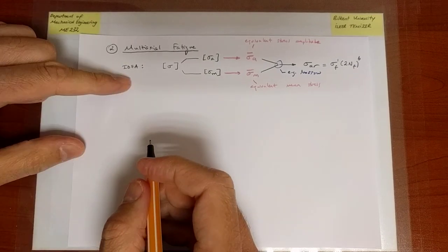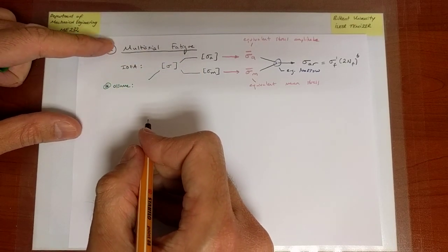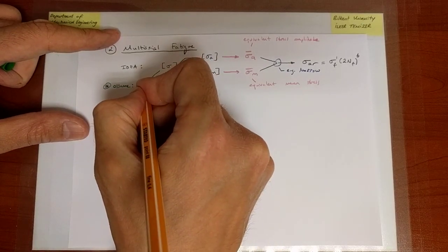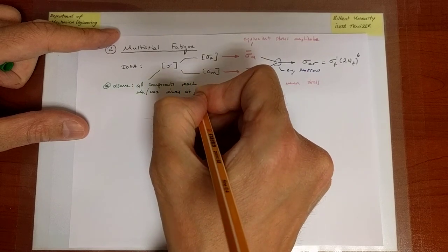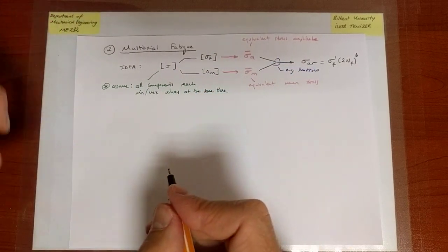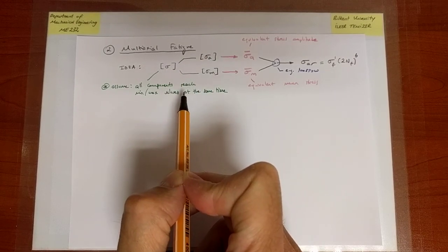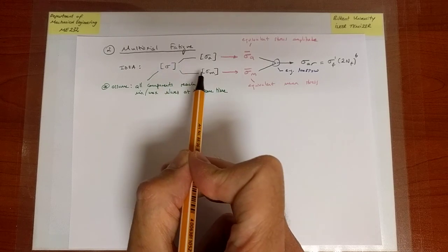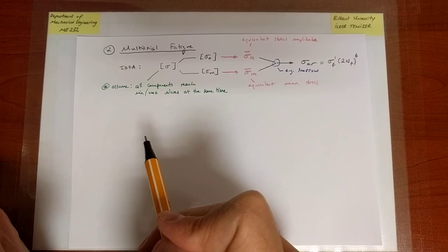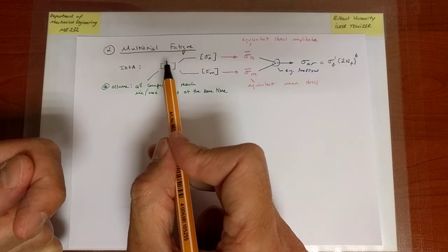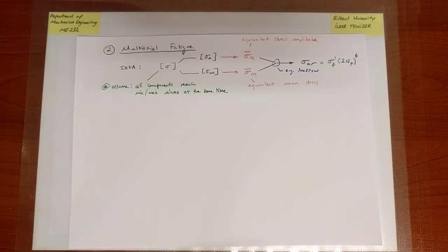As we do this, we are going to make an important assumption: we assume that all components reach their minimum and maximum values at the same time. A restriction that comes with this assumption is that the frequency of every component should be the same, and moreover, each component passes through the mean value at the same time. If one component is at a maximum, another should not be at its mean value, because that would imply the phase of the individual signals is not the same. So we require that all components reach mean and maximum values simultaneously.